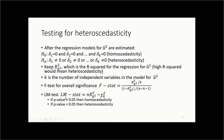The LM (Lagrange multiplier) test statistic is n times R-squared from the auxiliary regression, distributed as chi-squared with k degrees of freedom. A higher sample size or higher R-squared produces more significance. If the p-value is greater than 0.05, we have homoscedasticity; if less than 0.05, we have heteroscedasticity. Corrections are only needed if we find heteroscedasticity; otherwise, everything works fine.